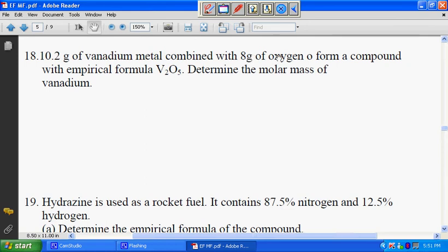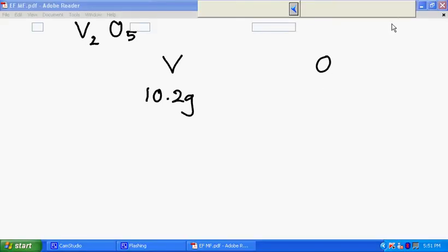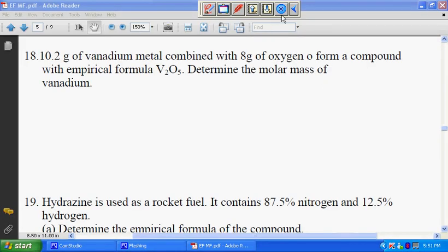V2O5, so we have V, we have O. So we have 10.2 grams, and then we have 8 grams of oxygen. We need to find out the molar mass of vanadium, which is not given.